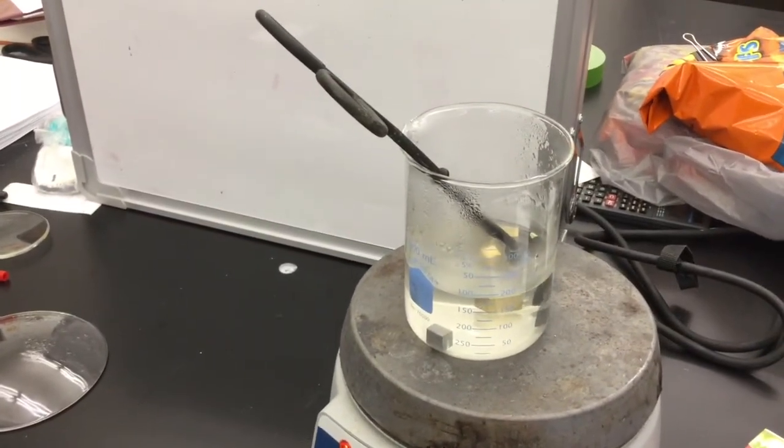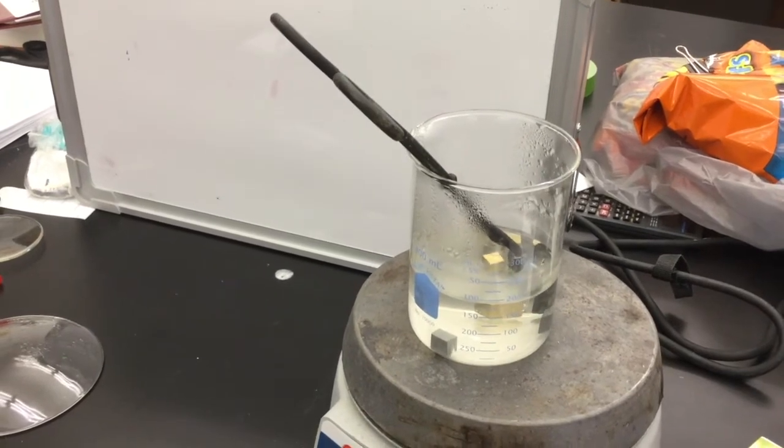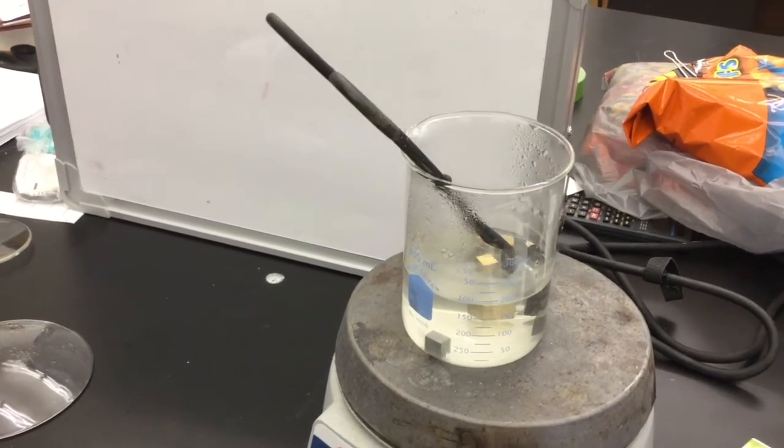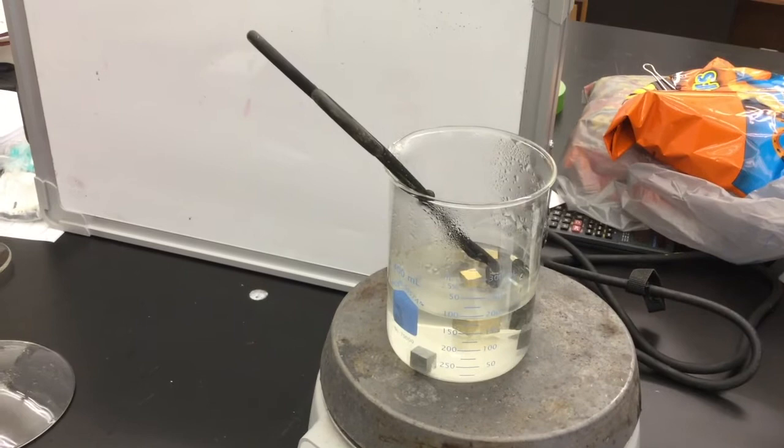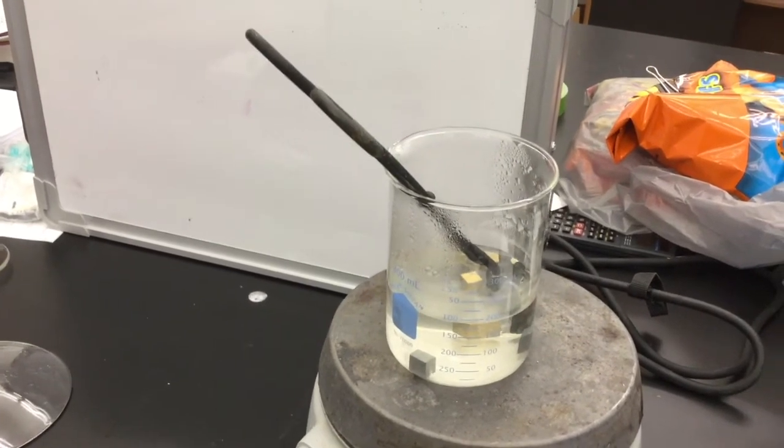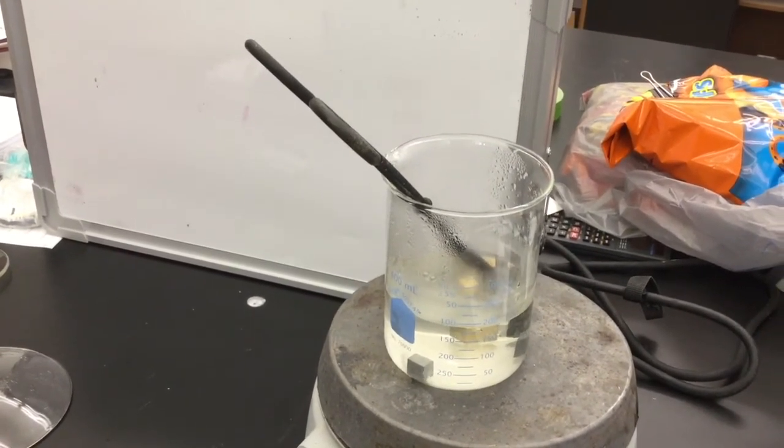Place your tongs into the beaker of hot water for the last minute or two before you remove the metal pieces. This way you are not transferring heat to the tongs from the metal pieces that need to be transferred to the water.